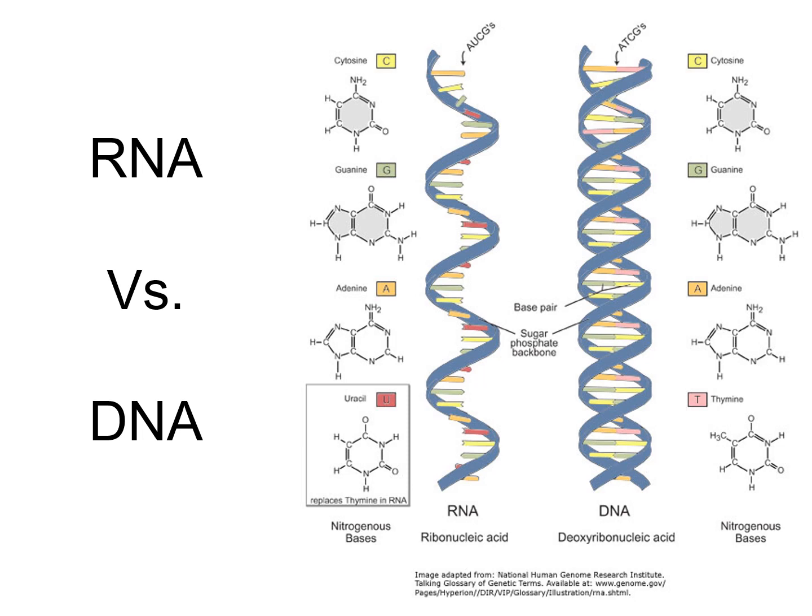RNA is a more fragile molecule because of that — it can be broken down quite readily. There are a few instances where we might see short bits of double-stranded RNA in our cells, but we won't get into that. It's also interesting that double-stranded RNA is quite common in many viruses. For human cells, though, RNA is almost always going to be single-stranded.